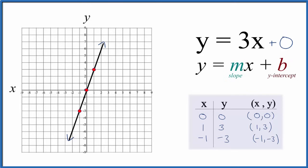So b, the y-intercept, is where the line crosses the y-axis, and it's 0. We go to the y-axis, and right there is 0.